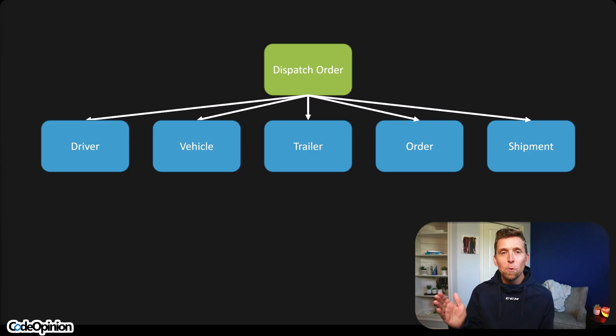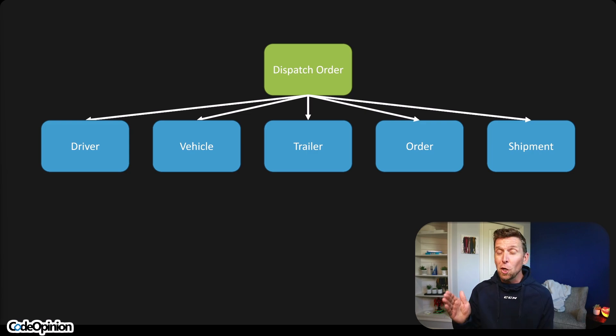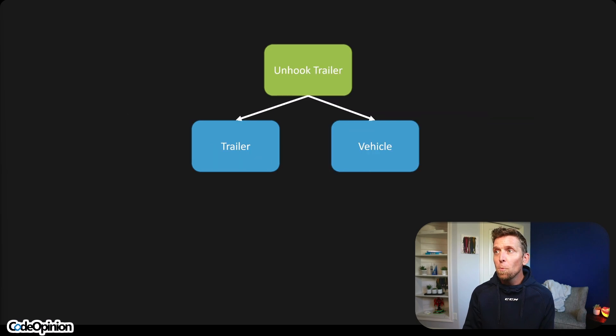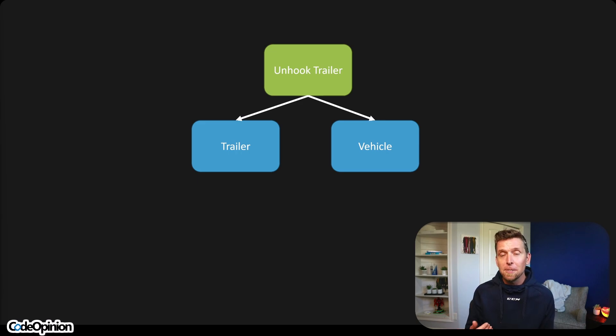When dispatching, we're just identifying, potentially, what vehicle, its current location, and what trailer is currently hooked to it when we dispatch that order. Versus when we're unhooking the trailer, we have various concerns about where we're unhooking it, when, what vehicle it is, and its current location. They're similar names — named the same entities — but they're different concepts. Don't repeat business concepts, whether that be entities that relate to workflows, business processes, or capabilities that the user is trying to perform. Don't repeat those.